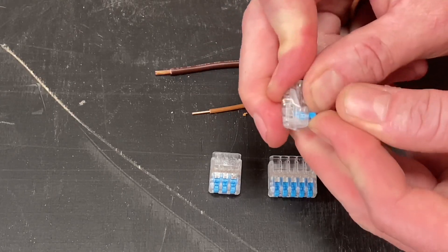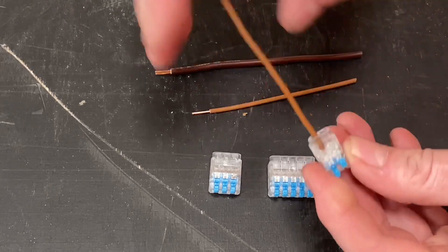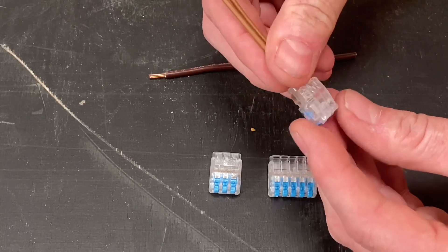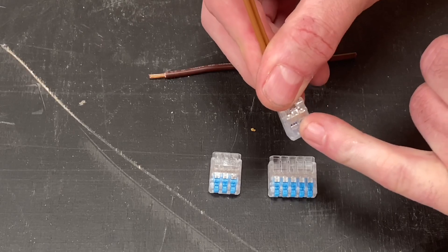Lift up my levers like so, insert my conductor and close it down, and therefore I've joined two conductors together. There's also a test port on here as well that you can just get into here in order if you needed to test at that position as well.